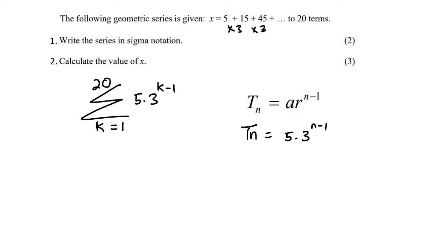Now, number 2 says calculate the value of x. Well, x is equal to 5 plus 15 plus 45 up to 20 terms. So x is the sum of 20 terms. Let me say here 20 terms. So x will be the sum of all of that.